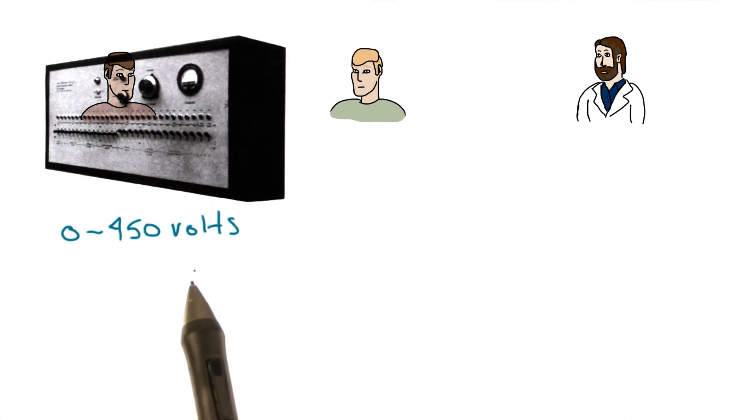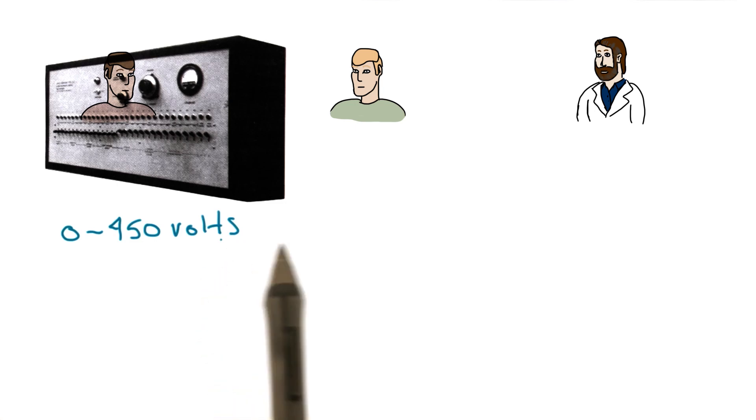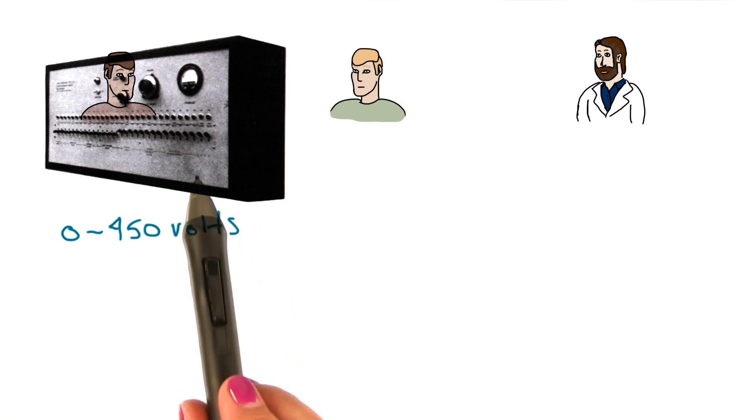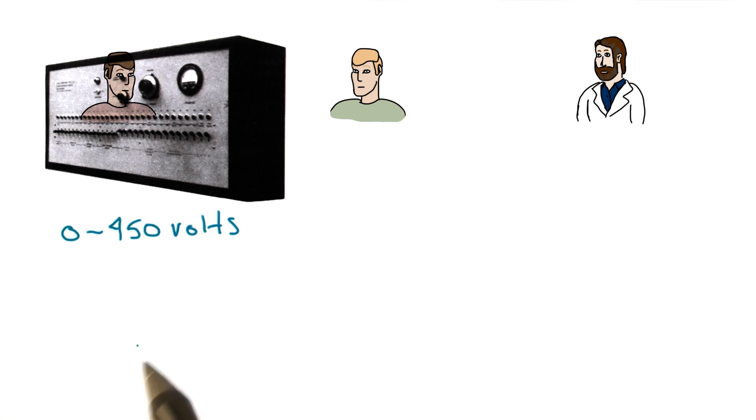The teacher and learner were to be tested in separate rooms, but before the learner left, the teacher actually was hooked up to the shock machine and received a very small shock. And this was to let the teacher know that the shock generator actually worked. And also, so the teacher was aware of the type of shocks that the learner would experience.